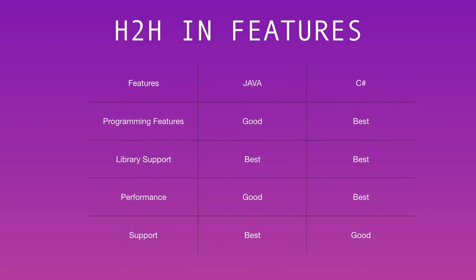The next thing is performance. When comparing Java and C# performance, before some years both were equal — there was no competition. Java is used in enterprise areas and C# / .NET is also used in enterprise areas.